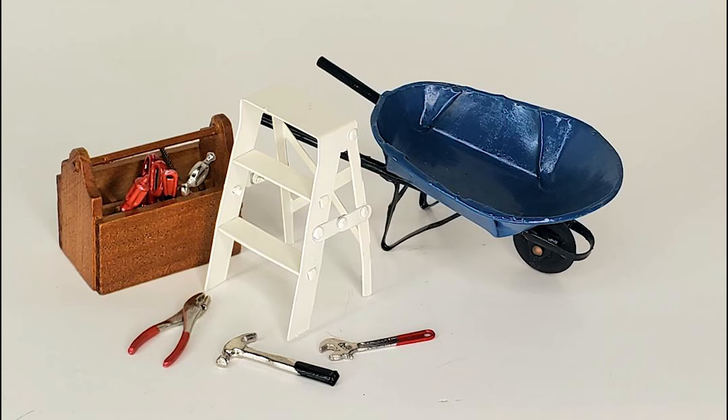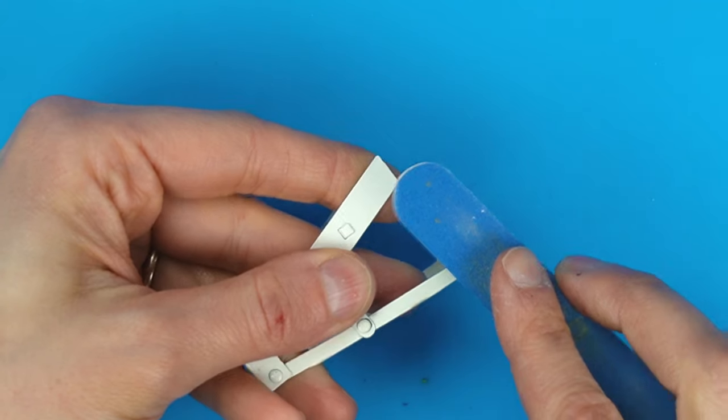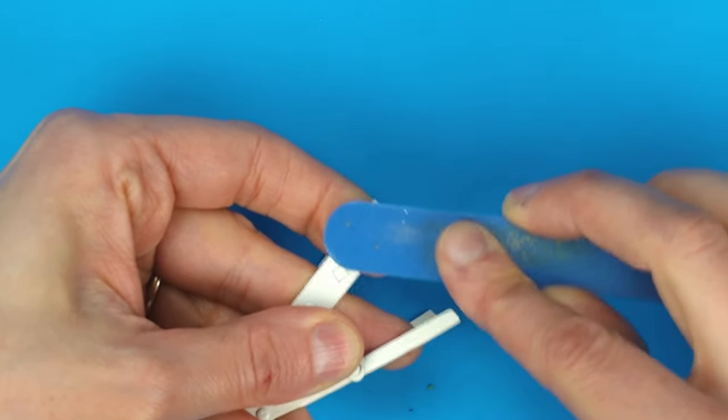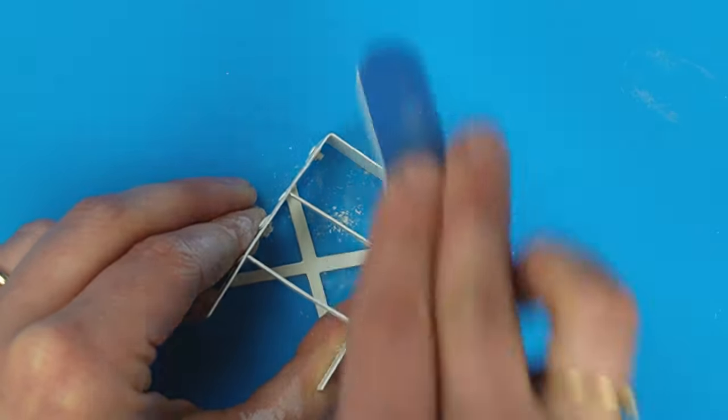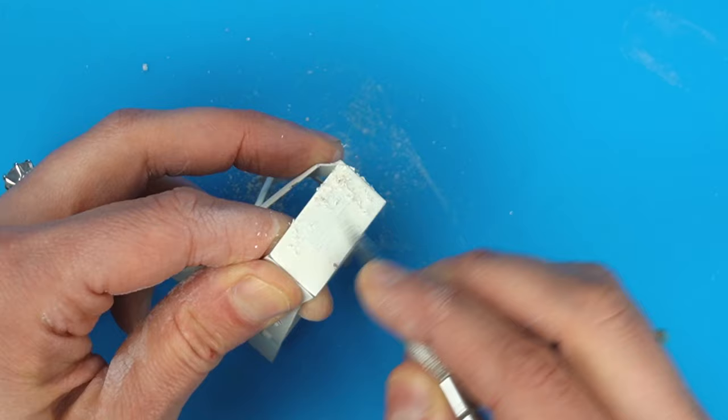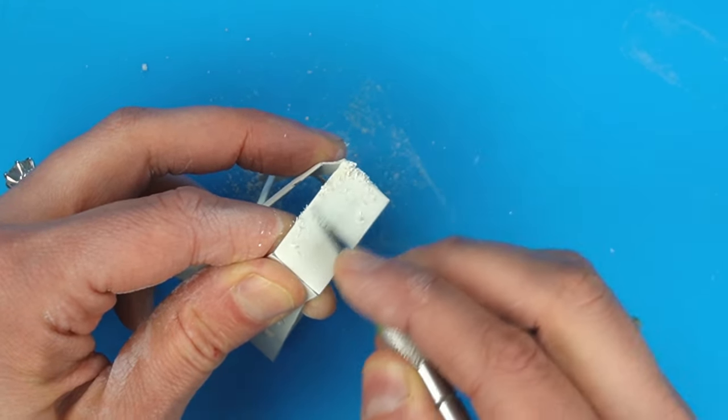I'll be using these minis in a diorama and I need them to look old. First up I'm working on this step ladder and I want to sand off some paint, but the paint was really stubborn on this metal ladder and I had to scrape it off with an X-Acto knife.